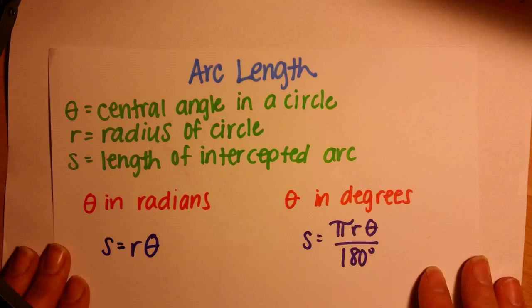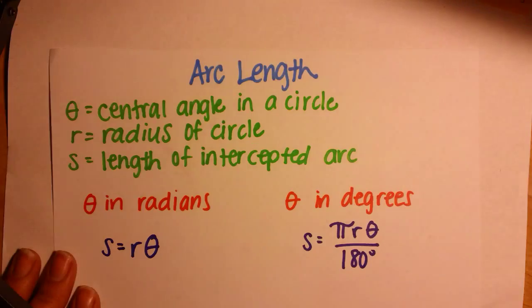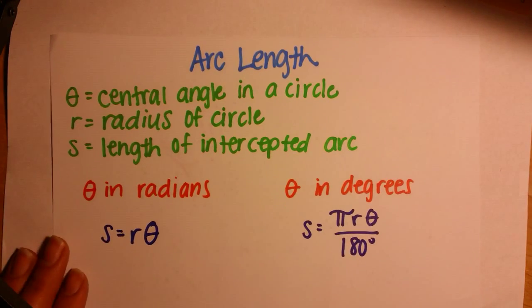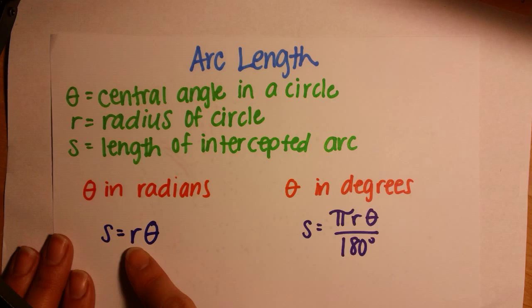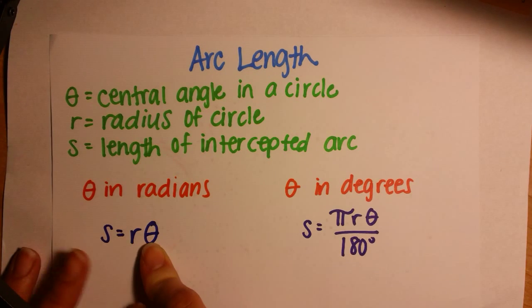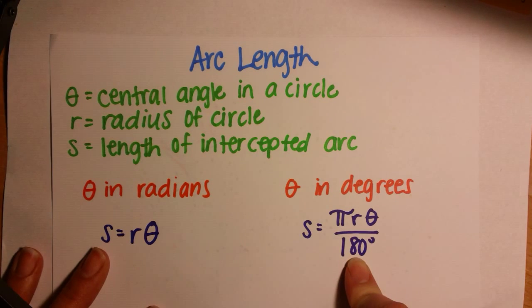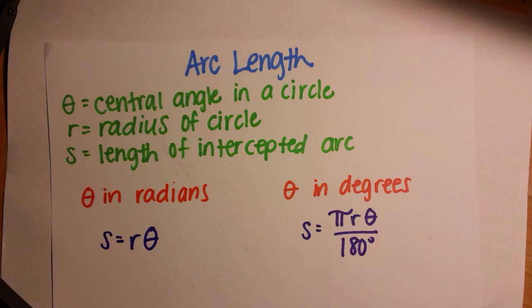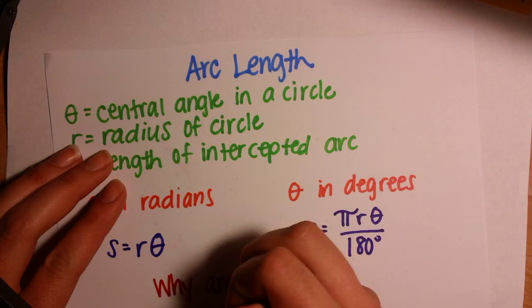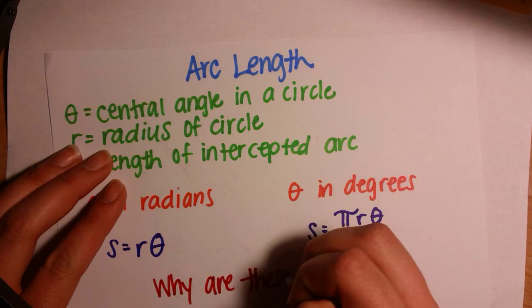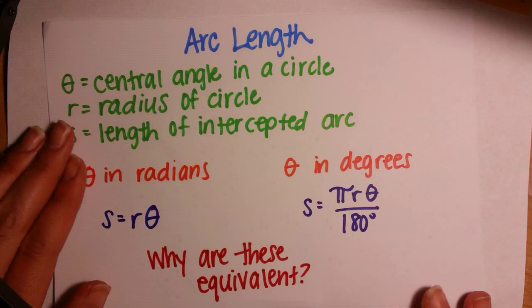Now let's talk about arc length. For arc length, theta will be our central angle in the circle, r will be the radius of the circle, and s will be the intercepted arc. When our theta is in radians, our formula for arc length is going to be s equals r theta. When our theta is in degrees, our arc length s will equal πrθ over 180 degrees. Something to think about is why are these equivalent? See if you can figure it out.